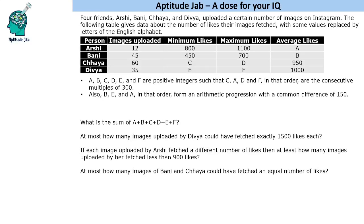Hello everyone, welcome to Aptitude Jab. This set says there are four friends: Arshi, Bani, Chhaya, and Divya. They uploaded a certain number of images on Instagram. The following table gives data about the number of likes their images fetched, with some values replaced by letters of the English alphabet. We have the images uploaded, the minimum number of likes, the maximum number of likes, and the average number of likes.